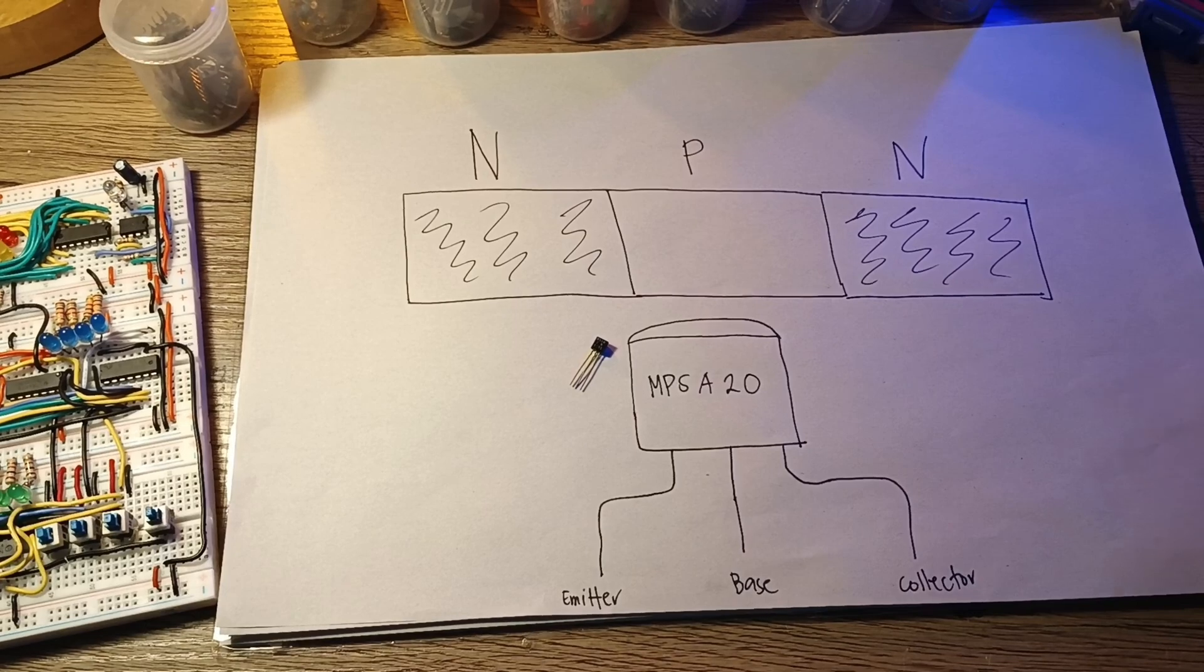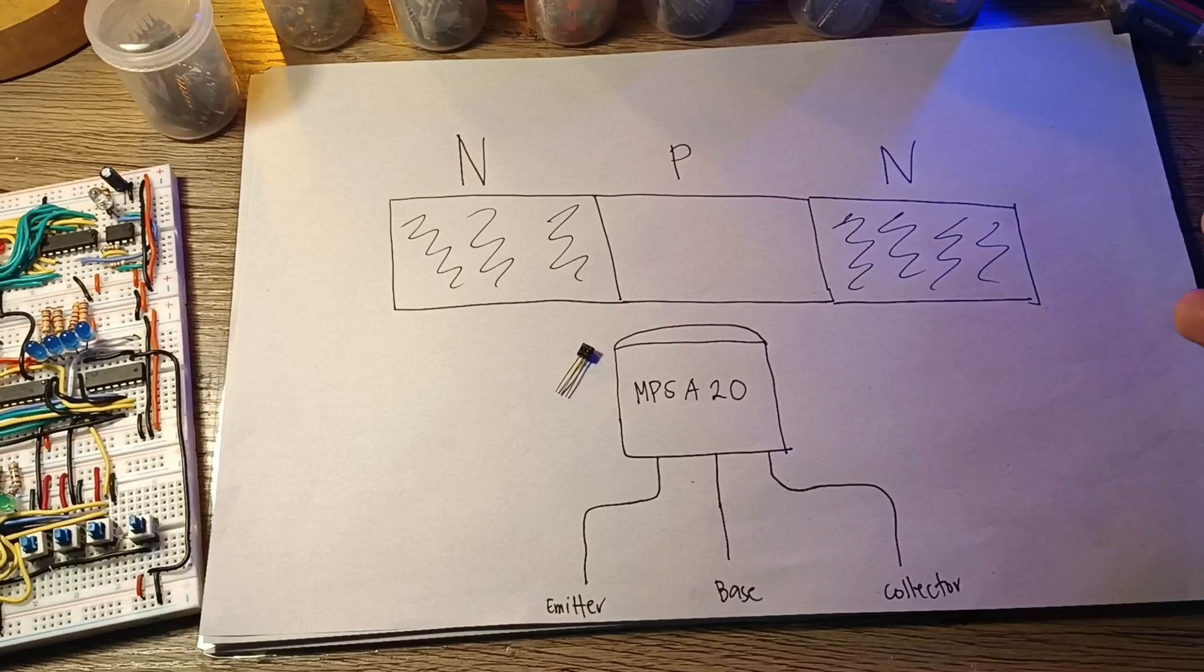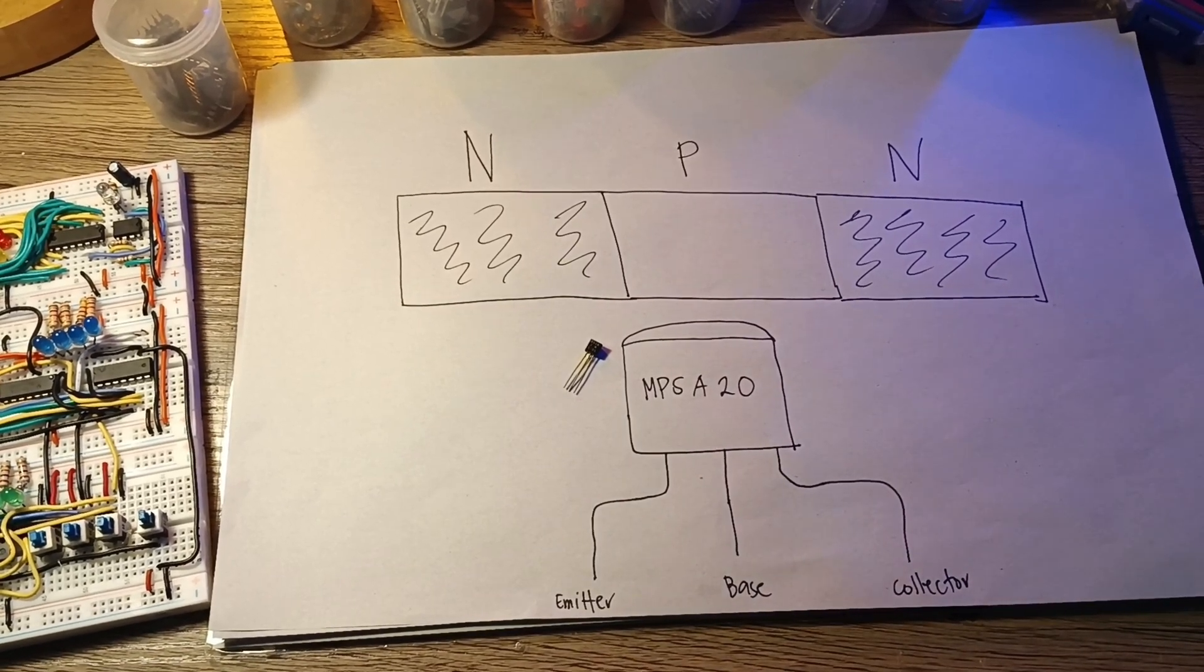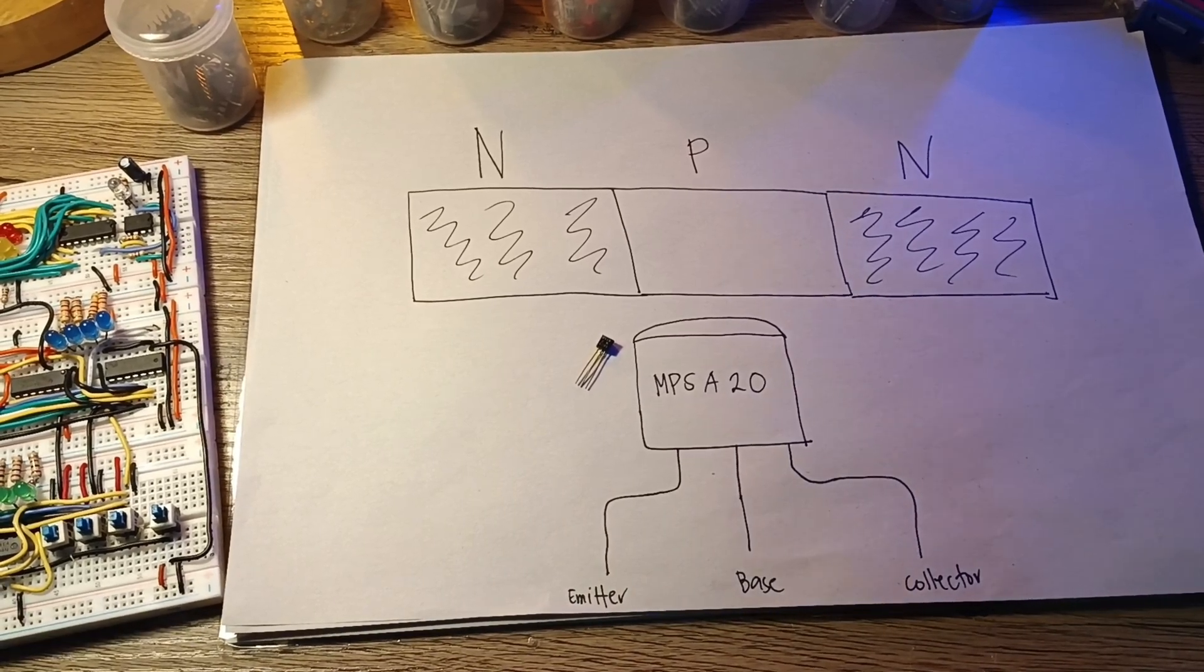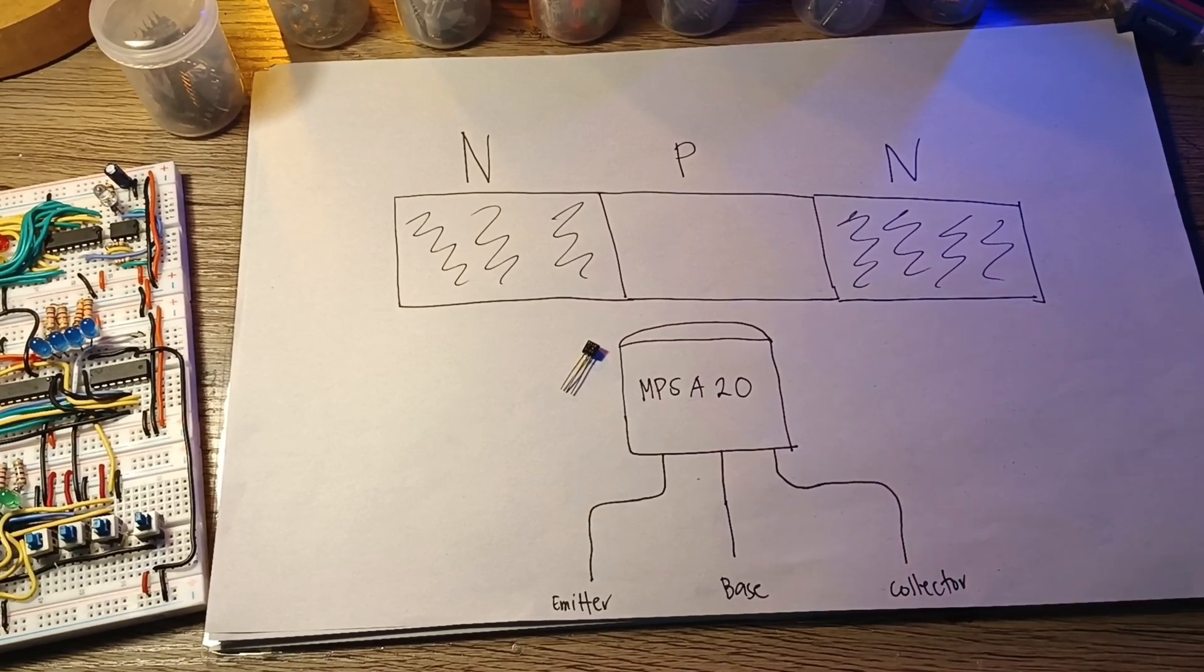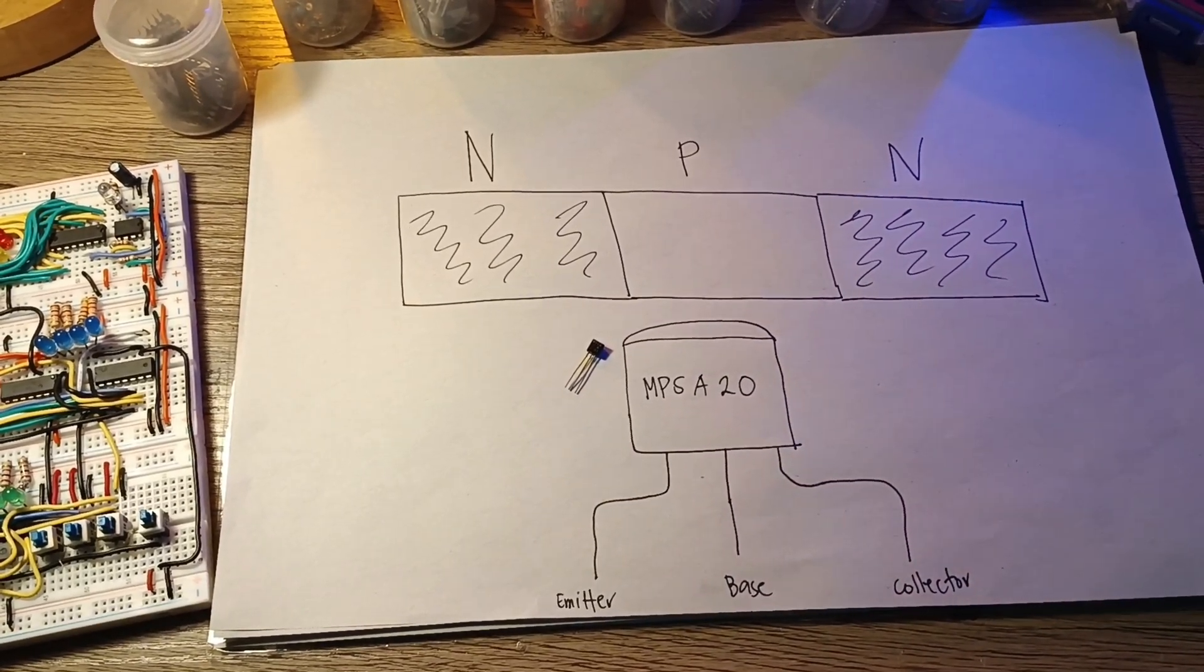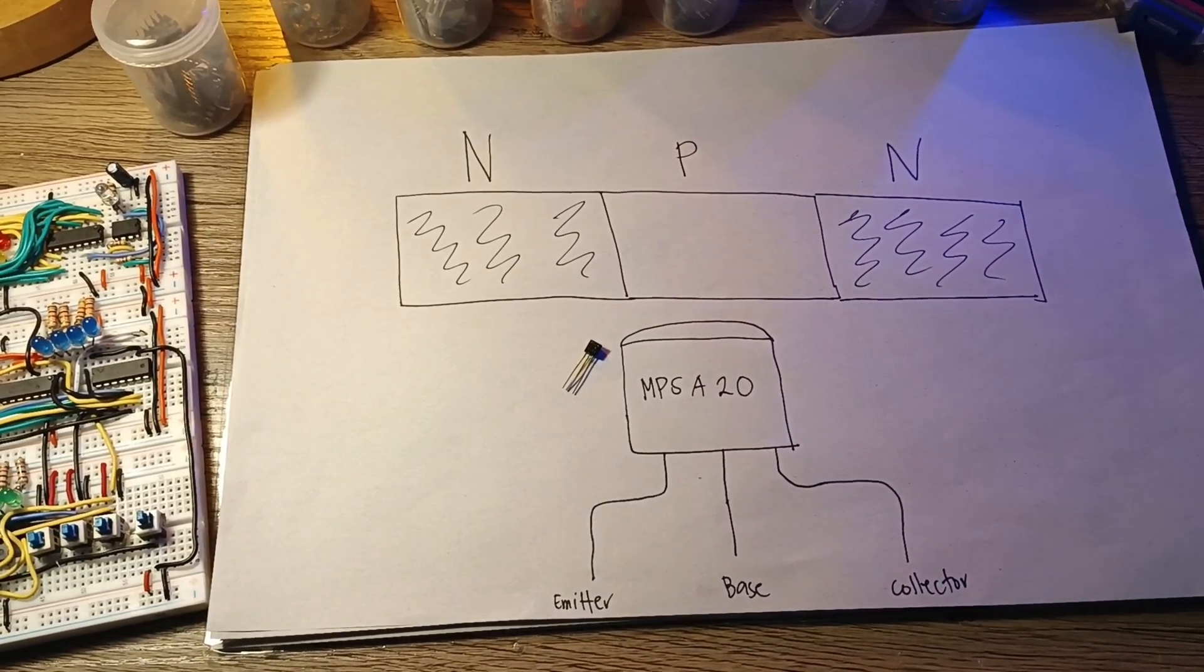In the cutoff region, the transistor is non-conductive. In the active region, it is partially conductive, and in saturation, it is fully conductive. I will not talk more about the different types of regions because that's a whole other topic. Maybe I will do another video about that, explaining the three regions.